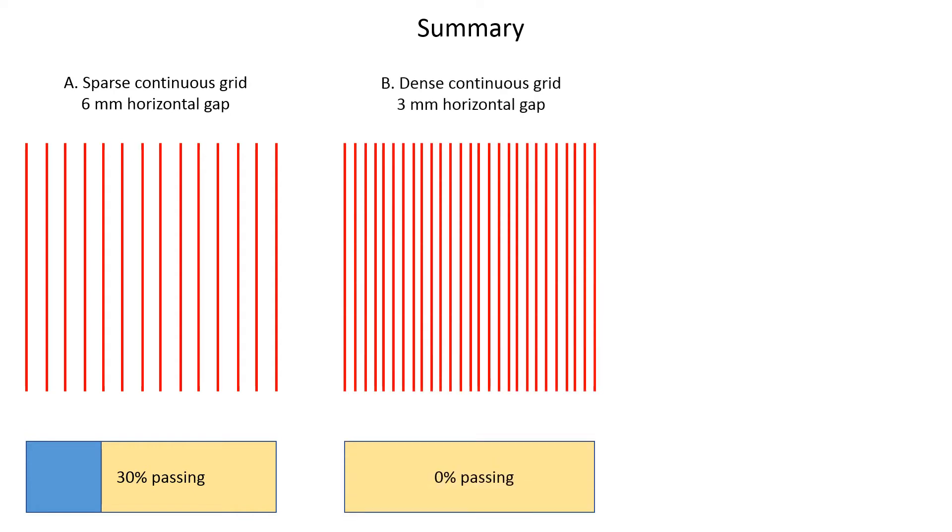In the second arrangement, the obstacle is a dense continuous grid. The microwave is completely blocked.